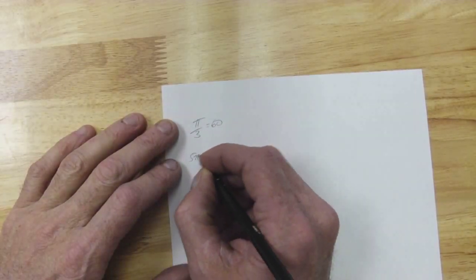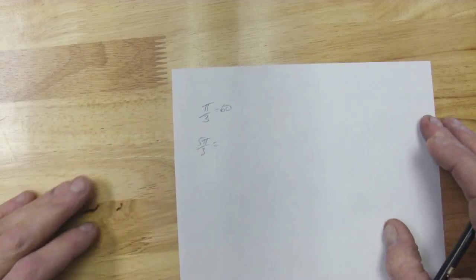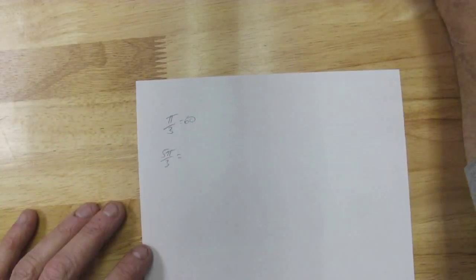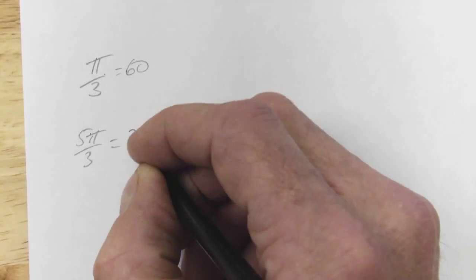But even if I say something like 5 pi over 3, what's that going to be? 300. Okay, 300. But I want all of us to get a little bit better, a little bit faster at it. So I want to do something visual.